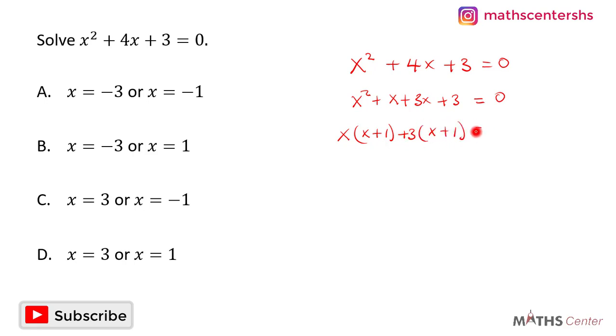We are done factorizing the quadratic expression. To solve for x, we have to equate the content of each bracket to zero.